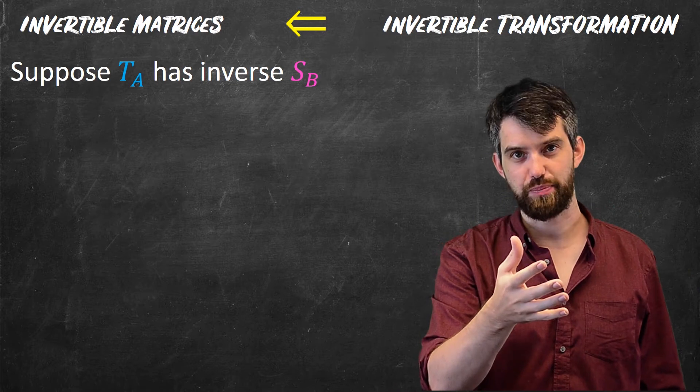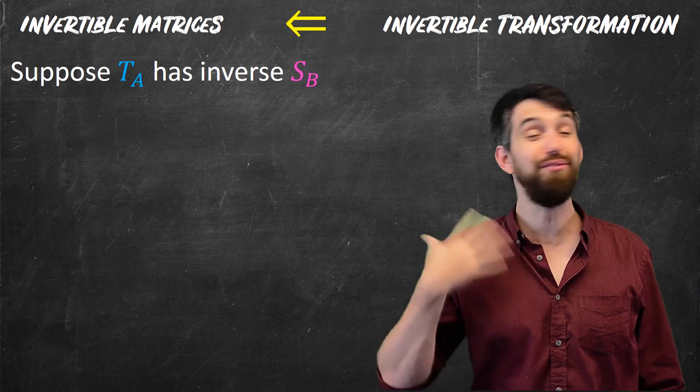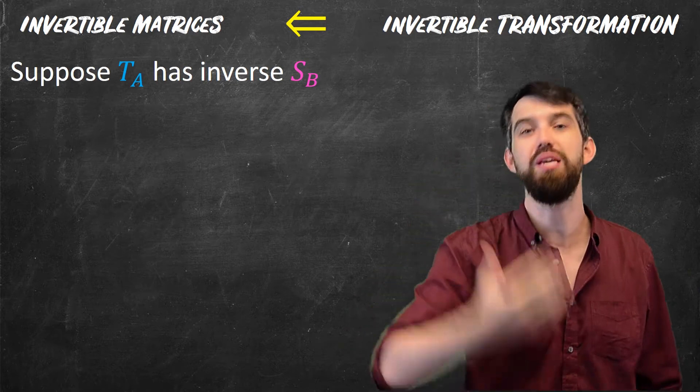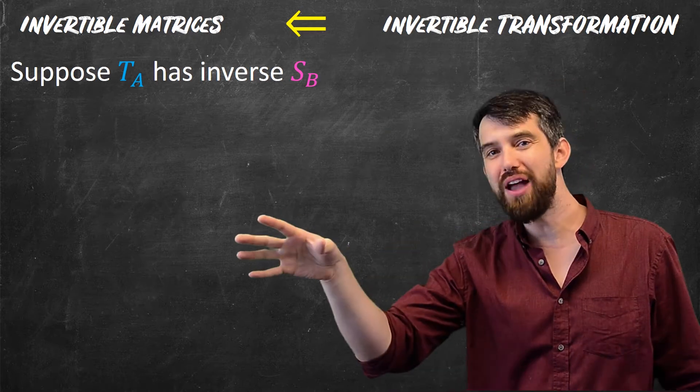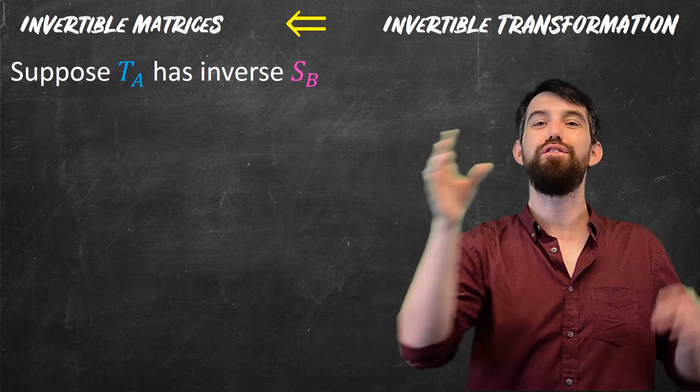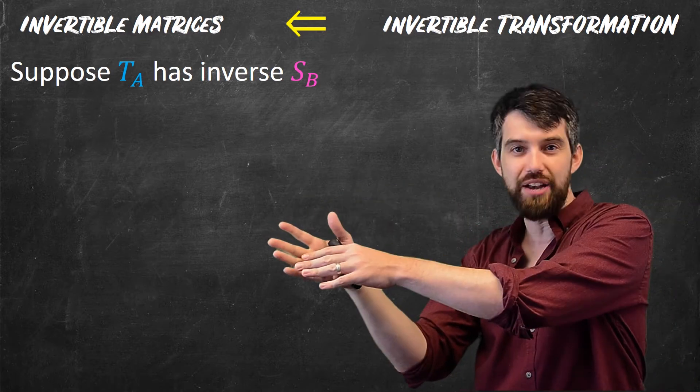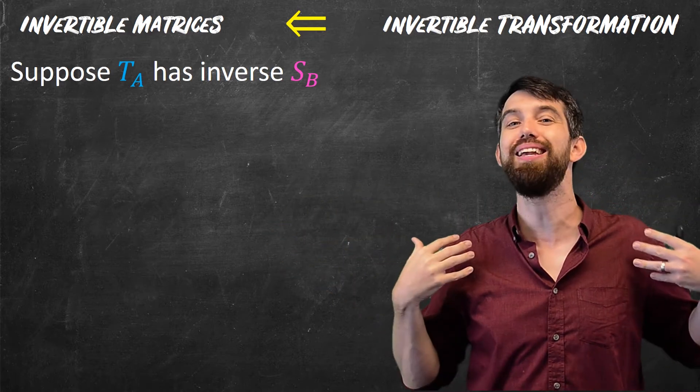Now, my first claim in this proof is going to be that the T_A, if it's invertible, it has to be onto. What did onto mean? Onto meant that no matter what vector you chose in the codomain, you could find something in the domain that would get to it. That's what onto was. Onto meant it hit everything.